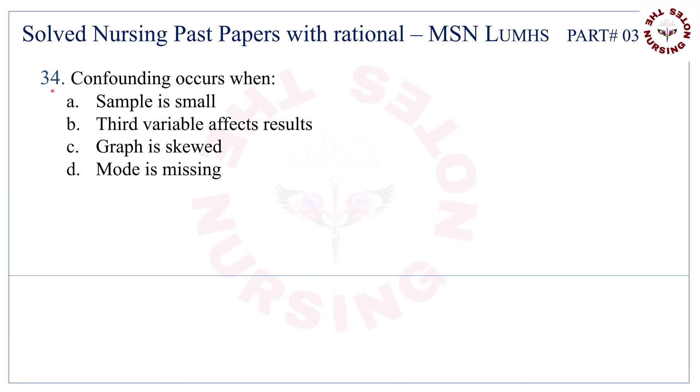Question number 34. Confounding occurs when — the correct answer is B — a third variable affects results.